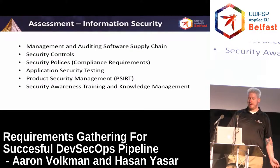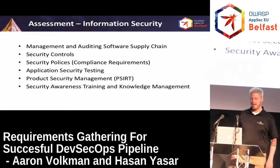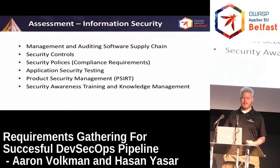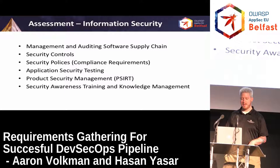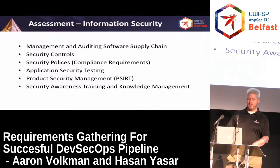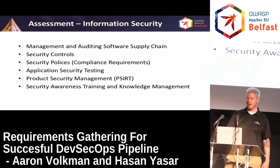Moving on to information security: we look at the management and auditing of the software supply chain. The software we build today is like Lego blocks — lots of commercial off-the-shelf pieces and libraries being glued together and integrated. How do we audit that supply chain of third-party stuff being downloaded off the internet? We look at the security controls in place, security policies, particularly their compliance requirements — what standard they have to be held to. We look at how they do application security testing if at all, their product security management, and security awareness training and knowledge management. This goes back to what information should be in a wiki versus what's being held in somebody's head and can't be shared throughout the organization.